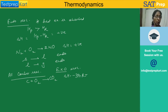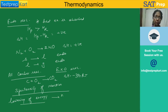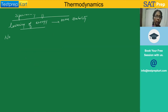So one criterion for the feasibility of a reaction is lowering of energy. Whenever lowering of energy takes place, that means more stability — any system having less energy is more stable. So lowering of energy is associated with greater stability.